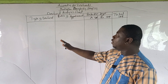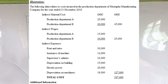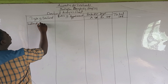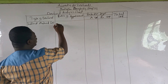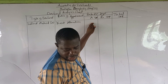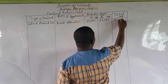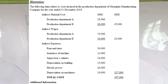Now let's solve the question. Indirect material costs: we were already given Department A as 25,000 and Department B as 20,000, so the basis of apportionment is direct allocation. Under the overhead analysis sheet, type of overhead is indirect material costs, basis of apportionment is direct allocation, Department A is 25,000, Department B is 20,000, and the total is 45,000.